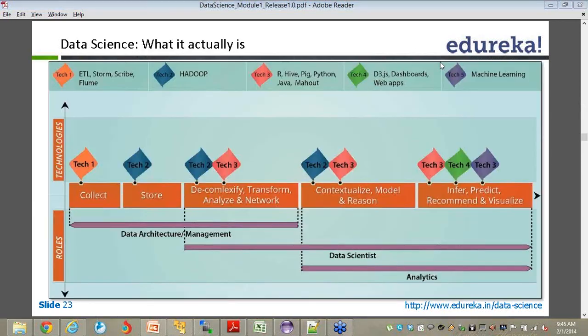So it is a diagram wherein on the top you can actually see various technologies. Technology stack 1 is basically ETL specialties like Storm, Scribe, Flume. Technology stack 2 is about Hadoop. Technology stack 3 is R, Hive, Pig, Python, Java, Mahout, and believe me, these are the stacks which are very popular. These are not an extensive list, just a sampling. Technology stack 4 is about the visualization part, creating dashboards and all. And then Tech 5 is the machine learning part, which is very important. This is the fifth technology stack which is required.